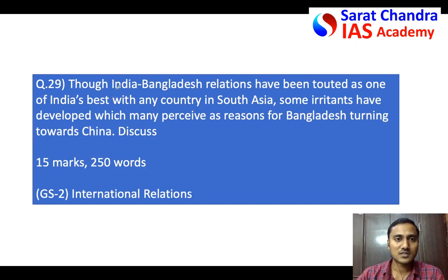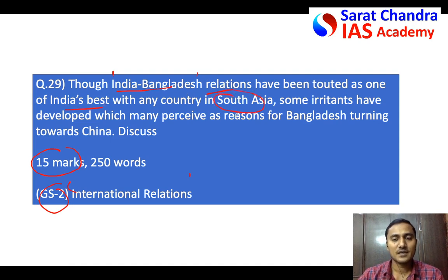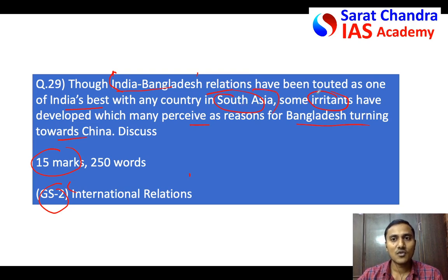It was regarding India-Bangladesh relations. Read the question carefully — it's a 15-mark question from GS Paper 2, International Relations. The question says: 'Though India-Bangladesh relations are touted to be one of the best in South Asia, there are some irritants that have developed recently, because of which some perceive that Bangladesh is turning towards China.' There are three parts: one, why India-Bangladesh relations are among the best in South Asia; two, what are the irritants developing recently; and three, do you think Bangladesh is turning towards China?